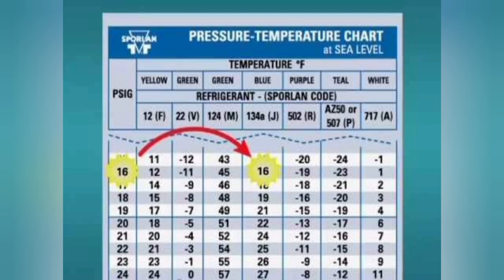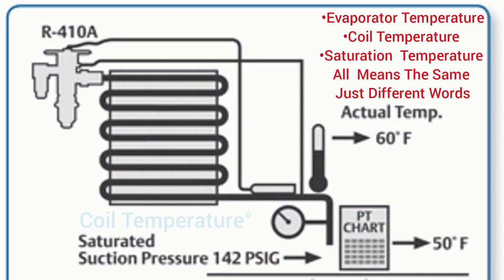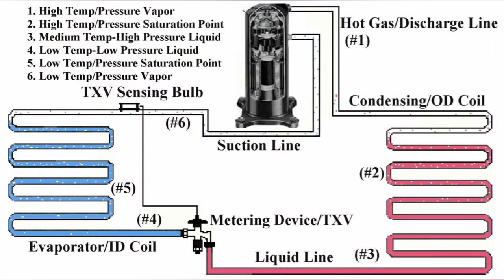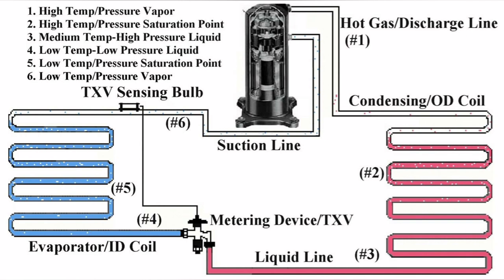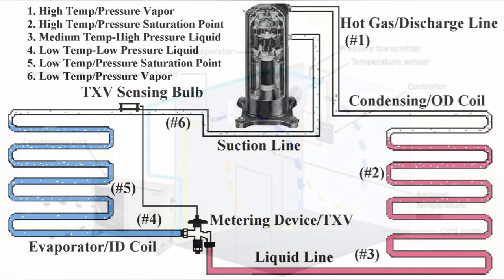To find your evaporator temperature — some people call it coil temperature or saturation temperature — but it's all the same, so don't get confused between the three. If you hook up your gauges to the low side of the system, you're checking the evaporator temperature. If you hook up your gauges to the high side of the system, you're checking your condenser temperature, also known as saturation or coil temperature.